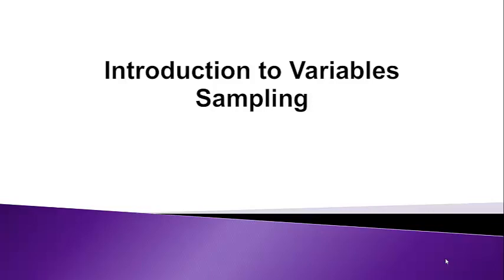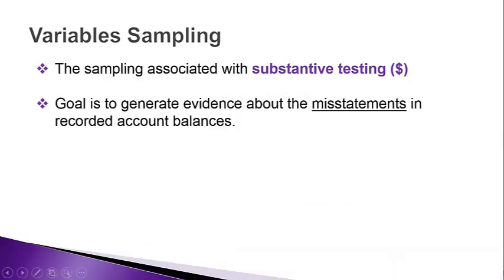This video takes a look at variable sampling. The goal is to understand how variable sampling results are evaluated. Variable sampling is associated with substantive testing, which is actually testing dollar amounts. There's another sampling method called attribute sampling, which deals with testing controls. The goal of variable sampling is to generate evidence about whether or not there are misstatements in recorded account balances.